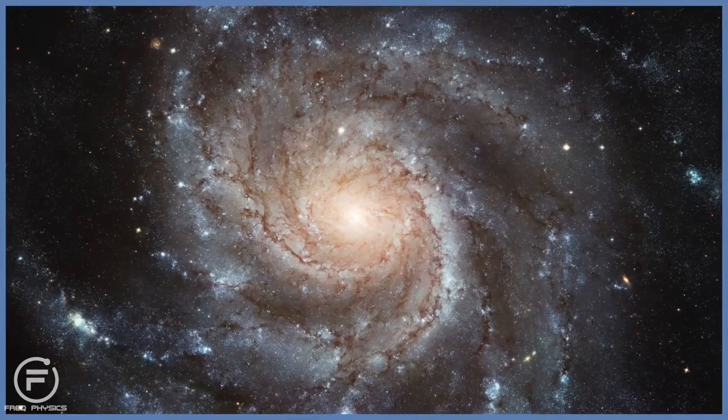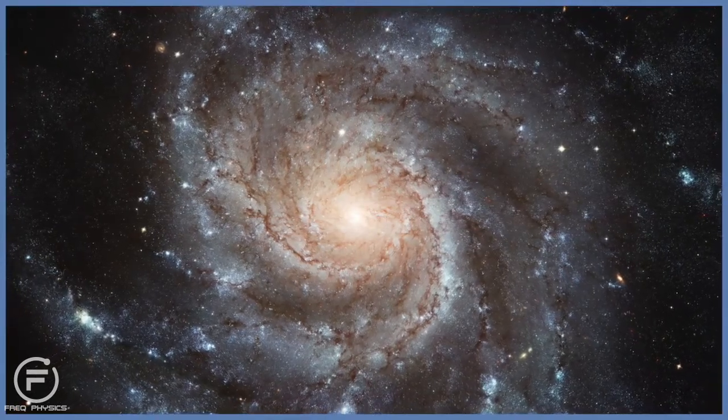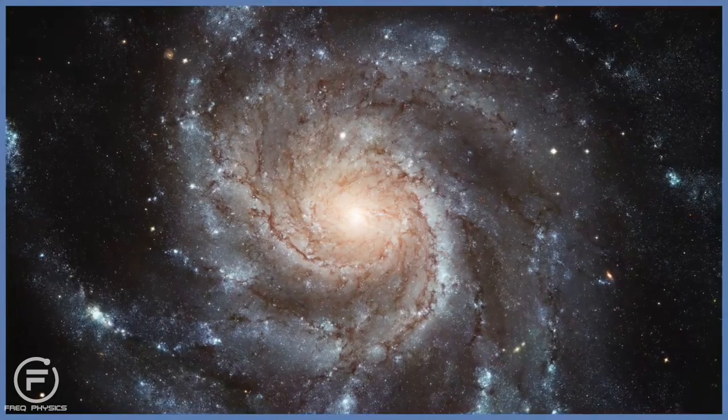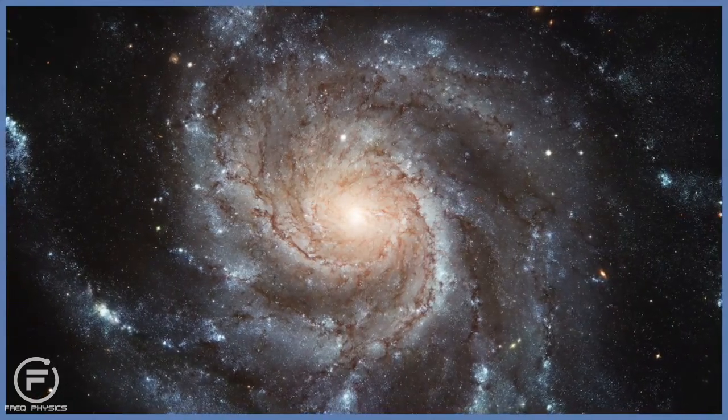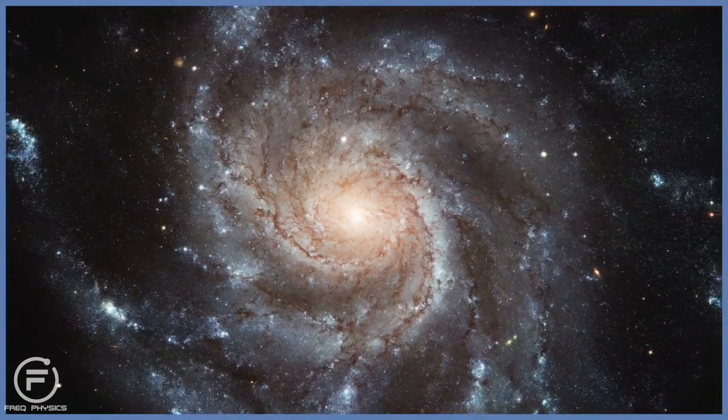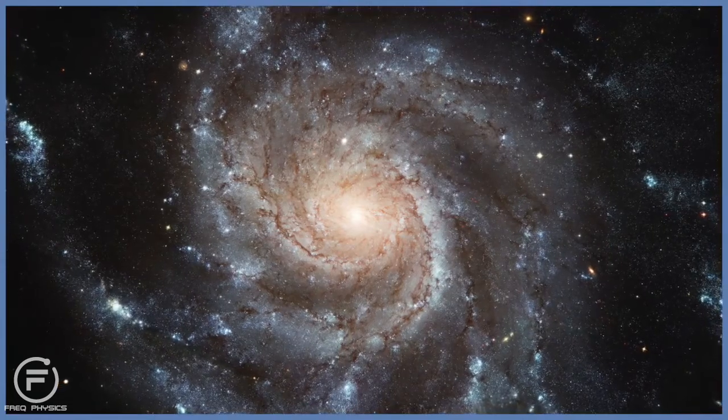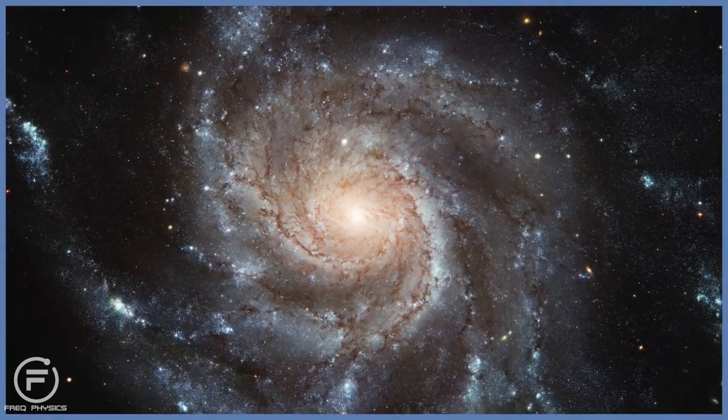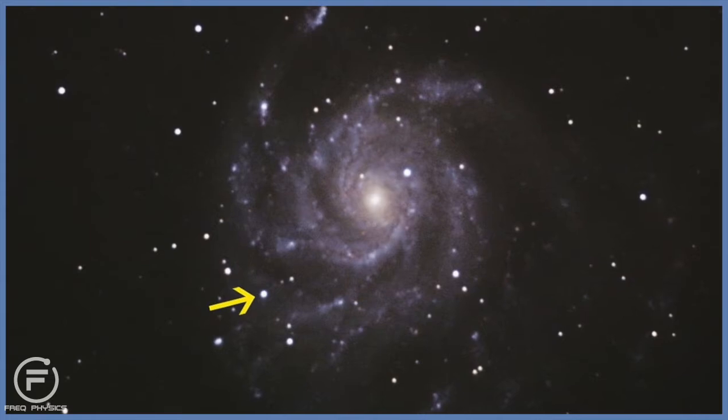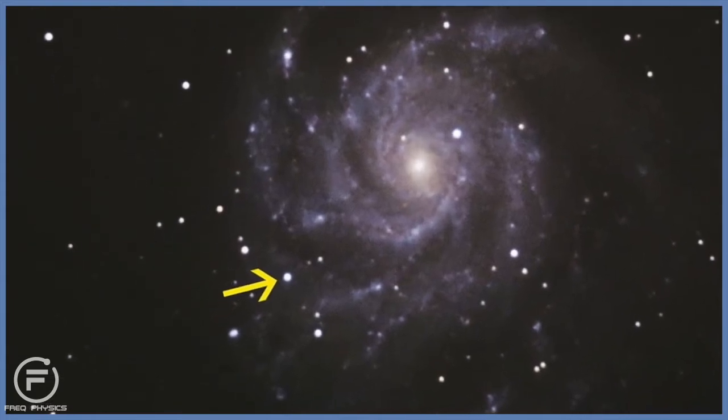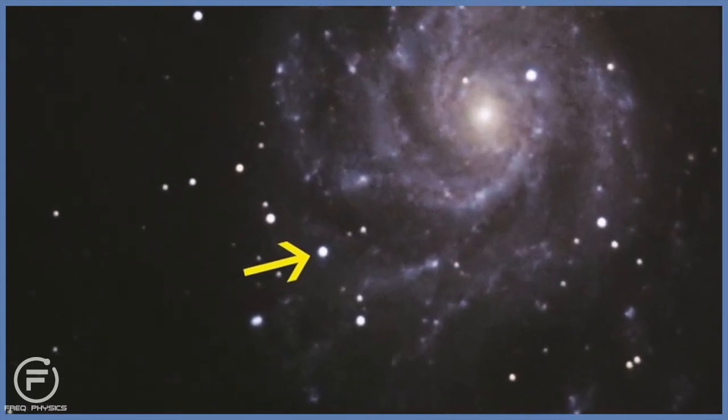So the most recent and nearby supernova of this type occurred in a spiral galaxy called Messier 101. This lies around 20 million light years away, so it's not a very close galaxy. It was first observed in August 2011 and was quite visible to small telescopes for weeks after the explosion.